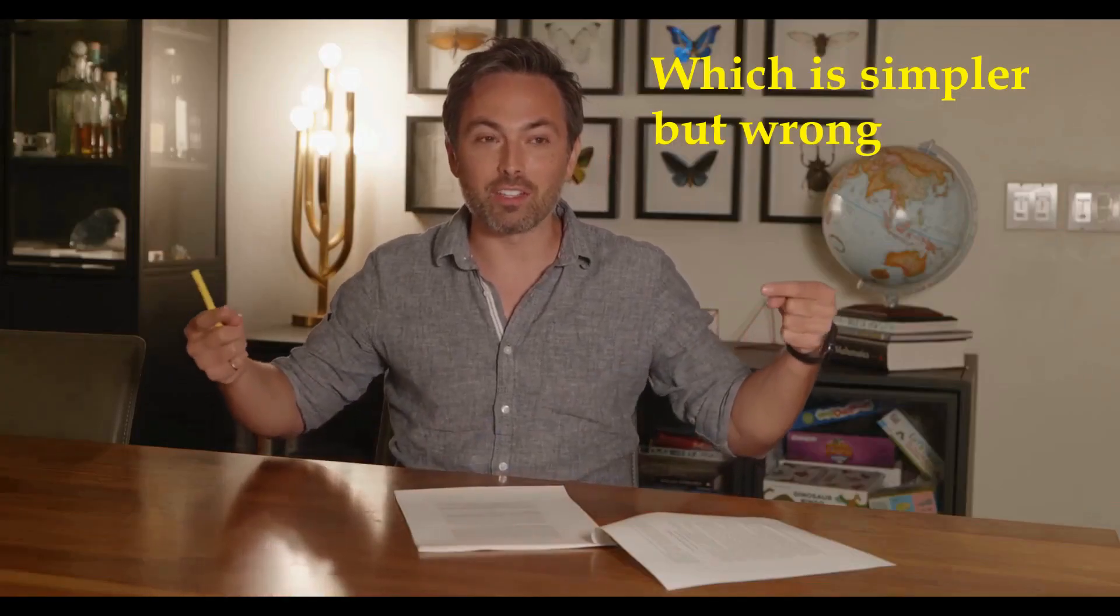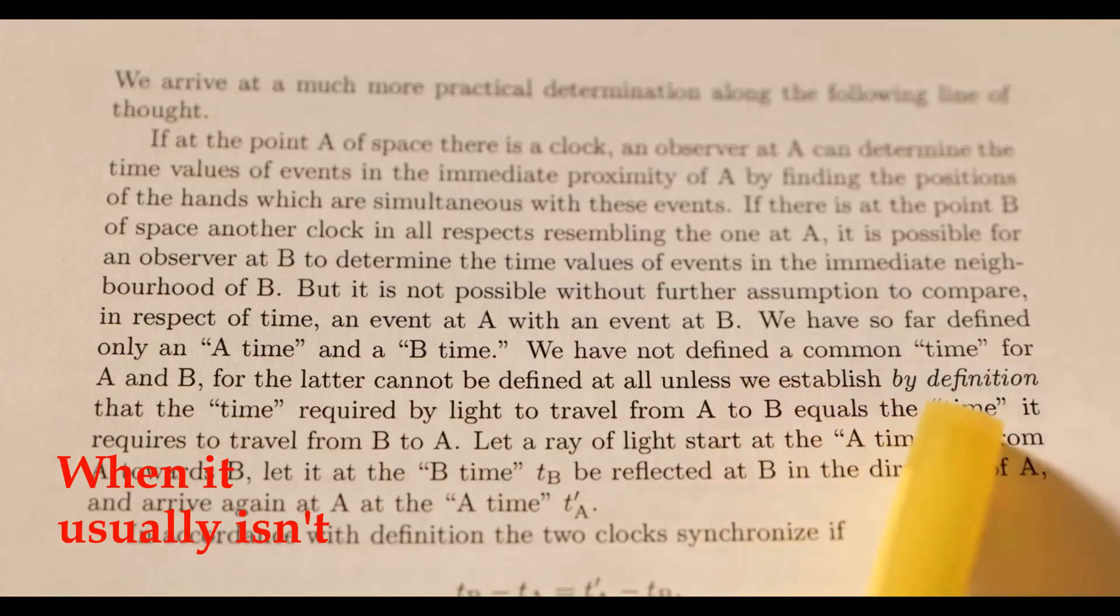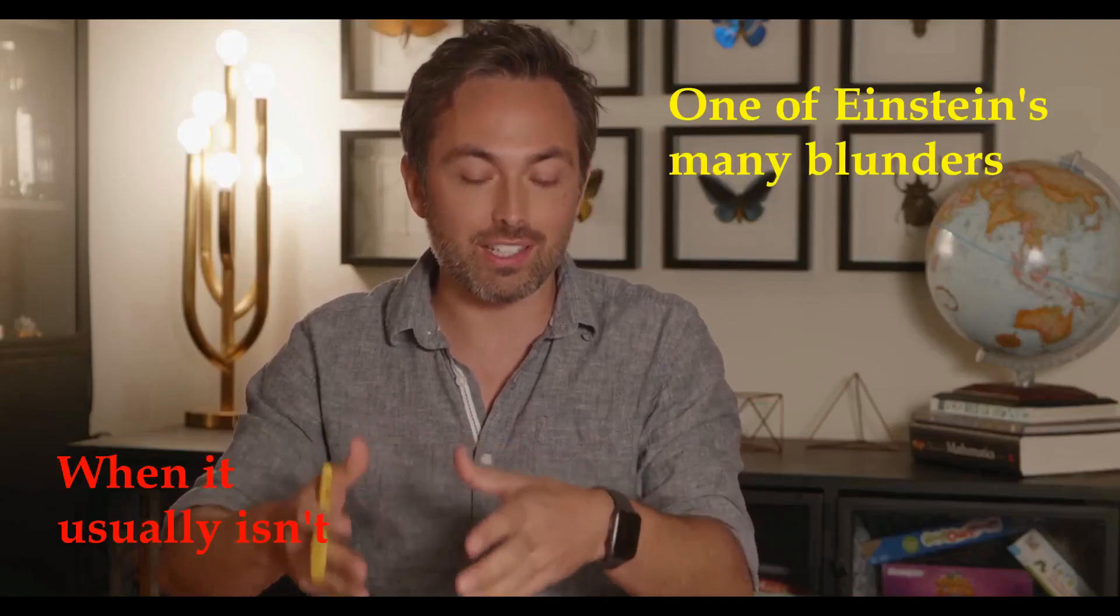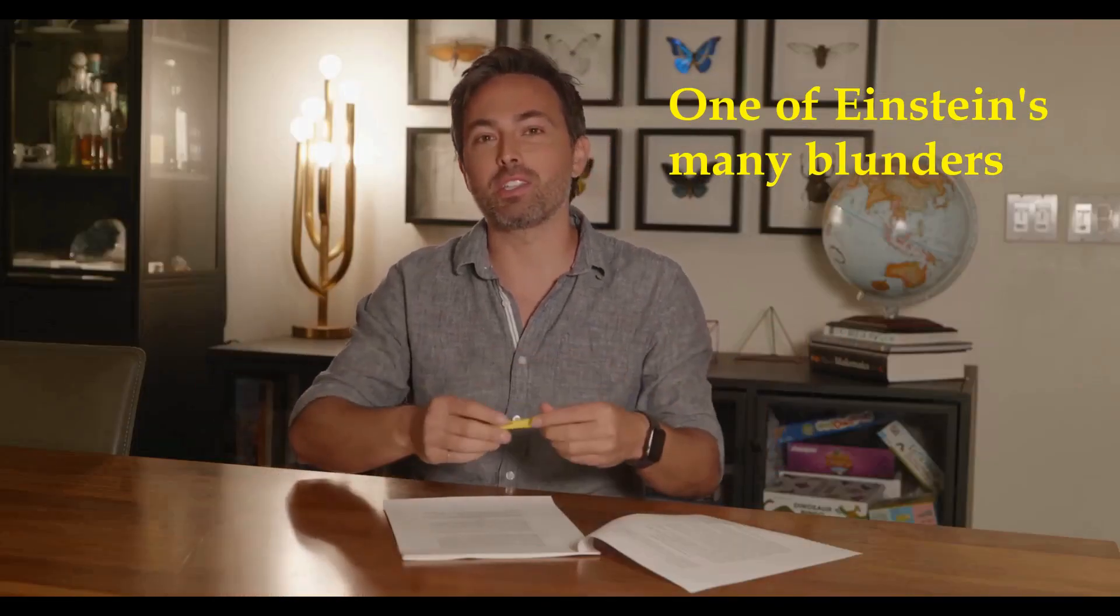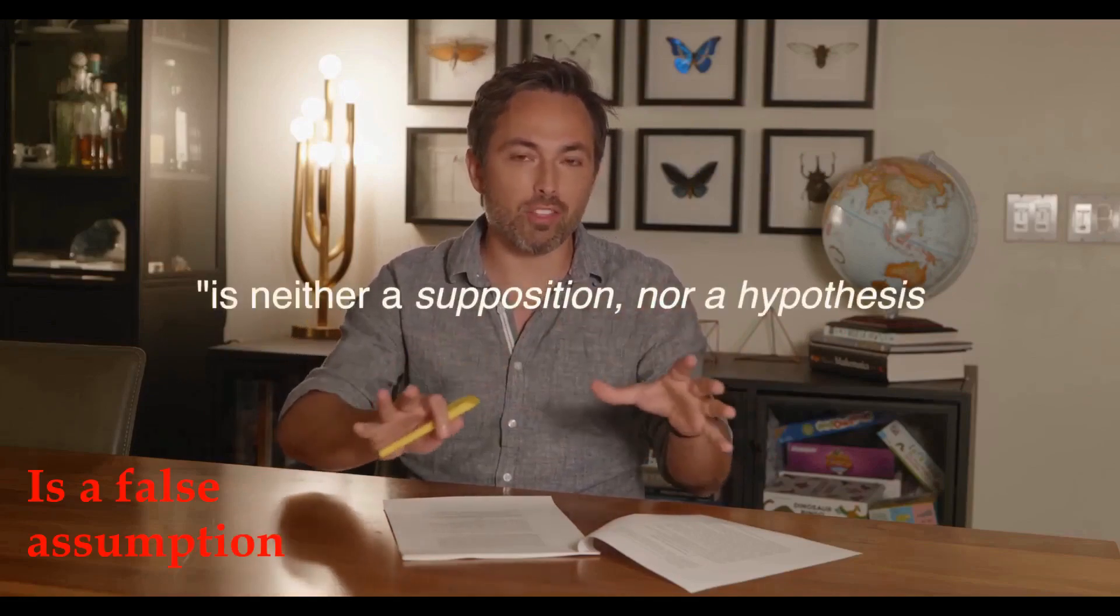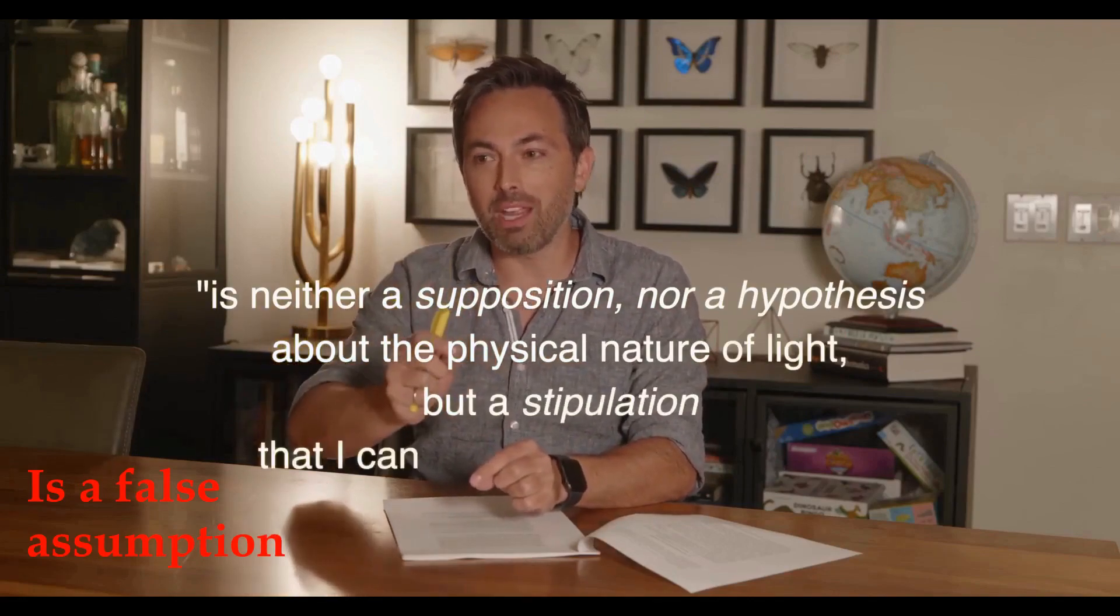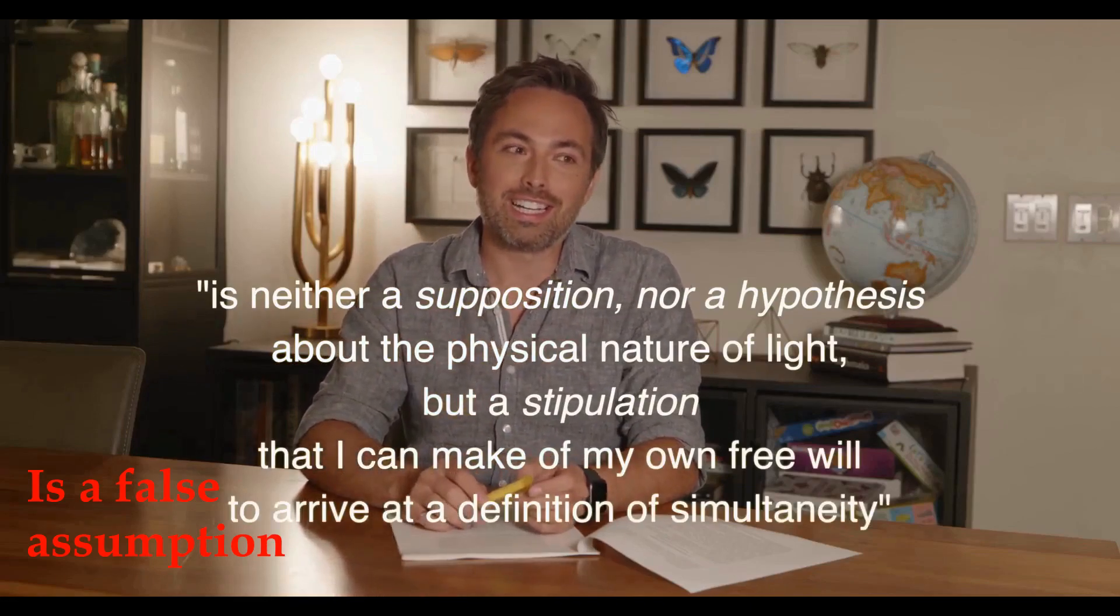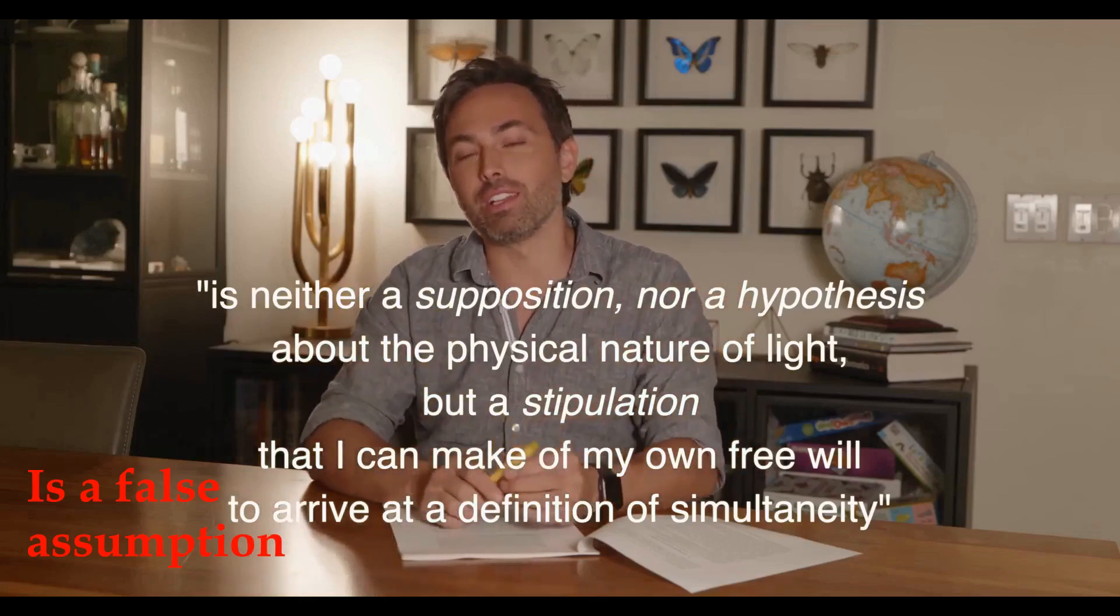He's essentially defining that the speed of light in opposite directions is the same, and he puts 'by definition' in italics to remind us that this is only a convention. It's known as the Einstein synchronization convention. As Einstein would later write, it is neither a supposition nor a hypothesis about the physical nature of light, but a stipulation that I can make of my own free will to arrive at a definition of simultaneity. That sounds a lot more subjective than how most people would imagine the speed of light is defined.